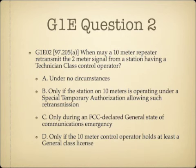Question 2. When may a 10 meter repeater retransmit the 2 meter signal from a station having a Technician class control operator? A, under no circumstances; B, only if the station on 10 meters is operating under a special temporary authorization allowing such retransmission; C, only during an FCC declared general state of communications emergency; or D, only if the 10 meter control operator holds at least a General class license.